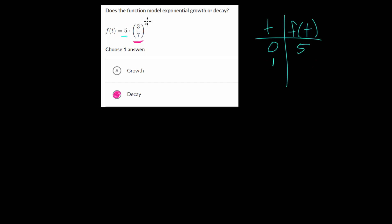And 5 times 3 sevenths would be 15 over 7, which is less than 5. If we plug in 2, you get 3 sevenths squared, which is 9 over 49, so this becomes 5 times 9 over 49, which would simplify to 45 over 49, and now we're less than 1.